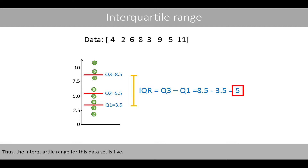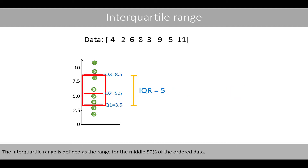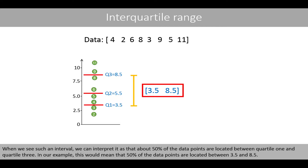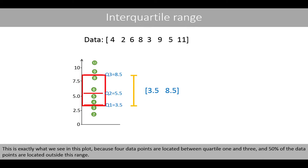Thus, the interquartile range for this dataset is 5. The interquartile range is defined as the range for the middle 50% of the ordered data. It is common that the interquartile range is also presented as an interval from quartile 1 to quartile 3. We can interpret this as about 50% of the data points being located between quartile 1 and quartile 3 — in this example, between 3.5 and 8.5. This is exactly what we see in the plot, as 4 data points are located between the quartiles, and 50% are outside this range.